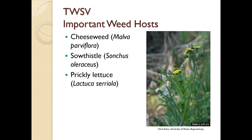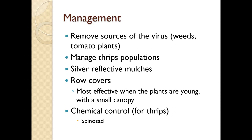Three weeds that will definitely provide inoculum include cheeseweed, sow thistle, and prickly lettuce. To manage this: remove sources of the virus, manage thrips populations — silver reflective mulches can repel them, row covers are most effective when plants are young with a small canopy, and chemical control would target the thrips. Spinosad is actually an organic product that can be used against thrips.